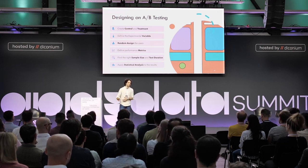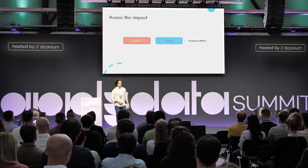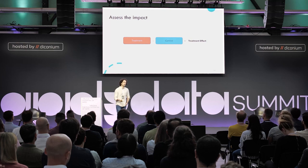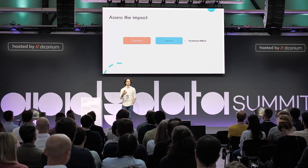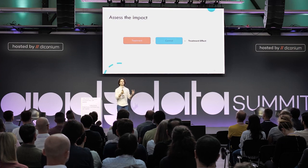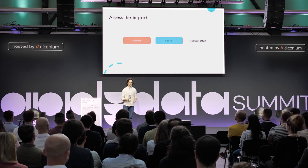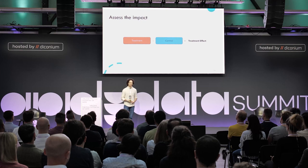How do we evaluate if the experiment was successful? We focus on the difference between the results we get from the treatment versus the control. As you can see in this slide, we usually refer to this as the treatment effect.